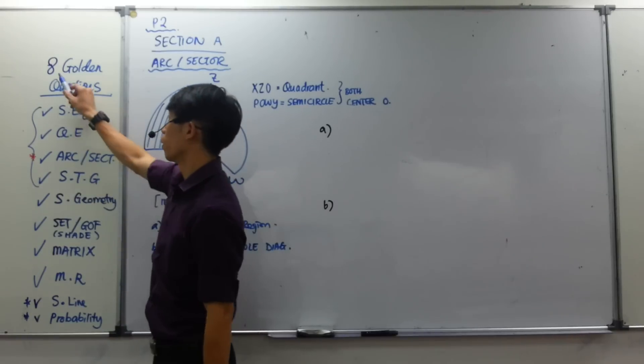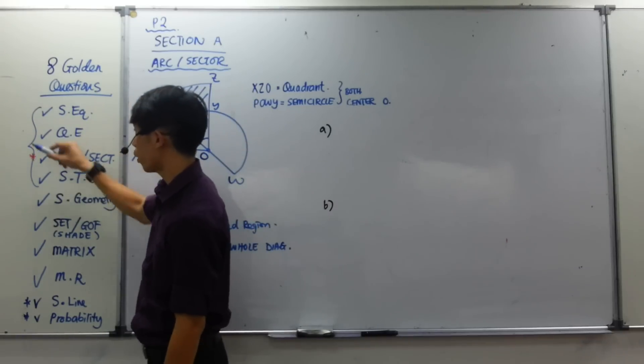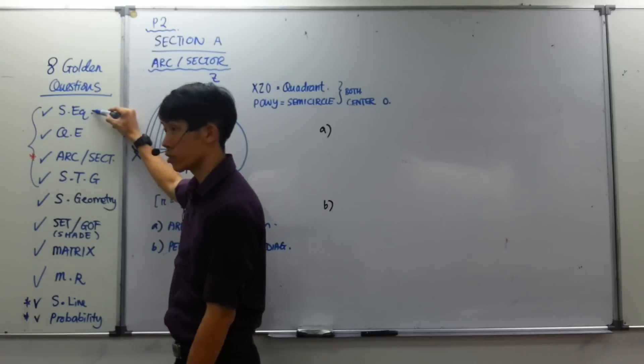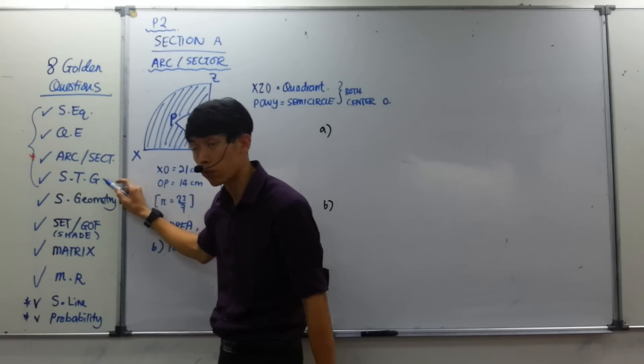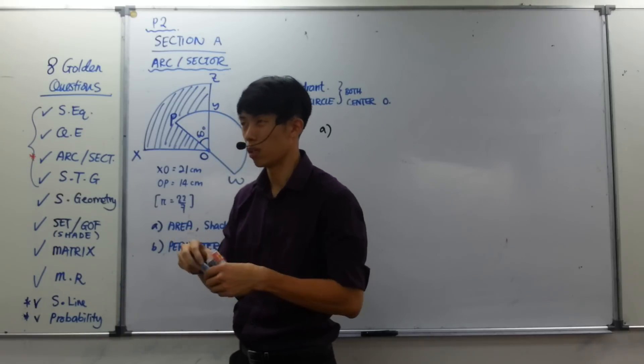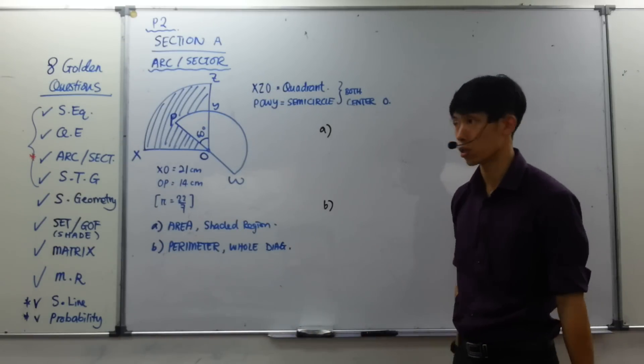So as promised, I mentioned about 8 golden questions in my Facebook wallet. Four out of the 8 golden questions will be here, and those 4 questions will be simultaneous equation, quadratic equation, arc and sector, and speed time graph. Because all these are considered easy questions, so if I teach you in seminar, it's considered waste of time. So I'll just post it on YouTube and you can see it yourself.